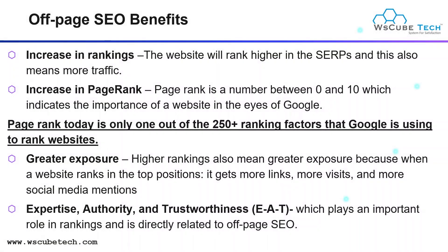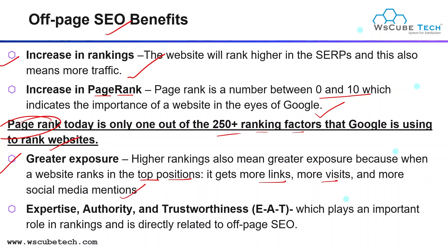Now let's look at some benefits of doing off-page SEO. One benefit, as we already know, is an increase in ranking — the website will rank higher in the search engine result page, which also means more traffic. Next, we have page rank. Page rank is a number between 0 and 10 which indicates the importance of a website in the eyes of Google, and it is one of the most important factors out of 250-plus ranking factors that Google uses to rank websites. With higher page rank, you get greater exposure — more traffic, more links, more visitors, more social media mentions, and definitely more ROI.